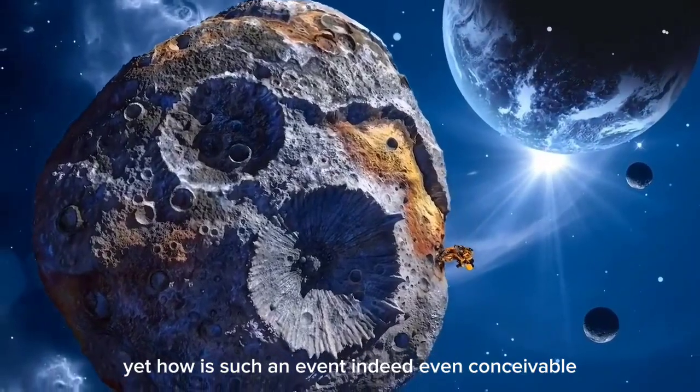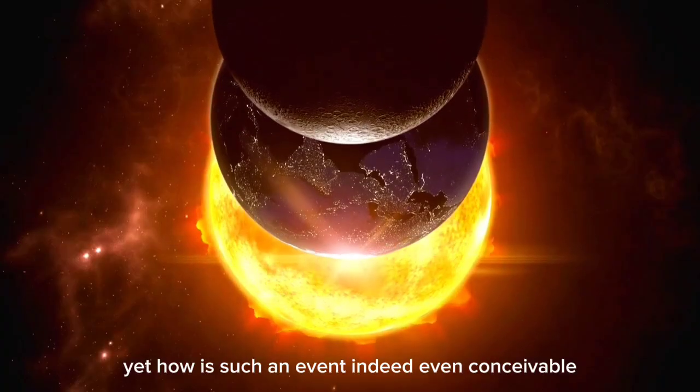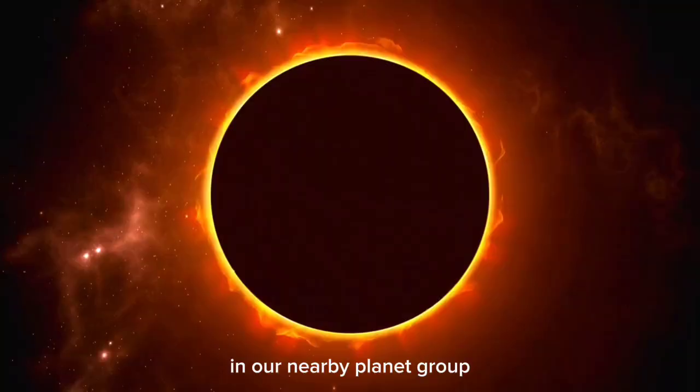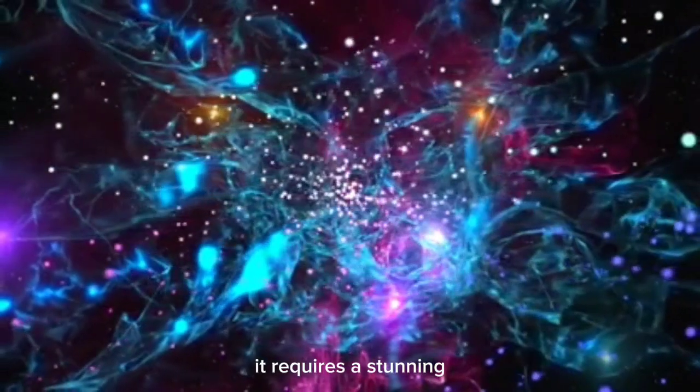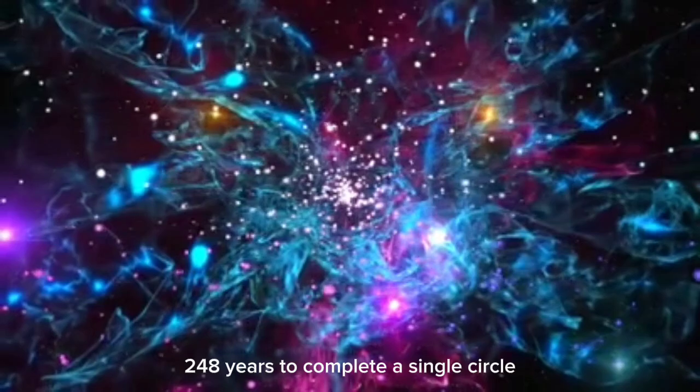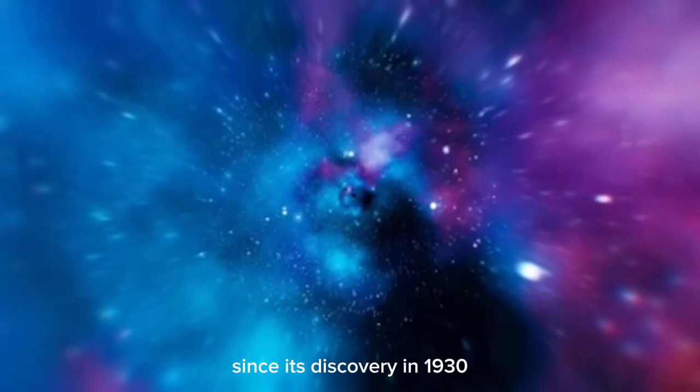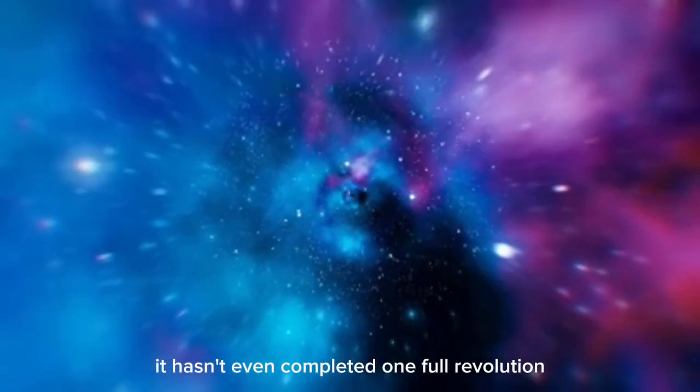How is such an event indeed even conceivable? Pluto's journey around the Sun is unlike that of any other planet in our solar system. It requires a stunning 248 years to complete a single orbit. Since its discovery in 1930, it hasn't even completed one full revolution.